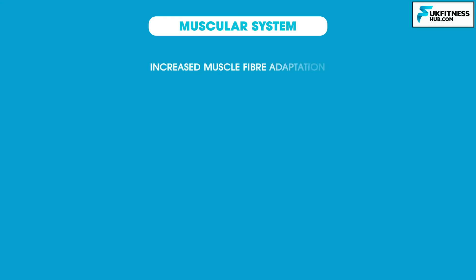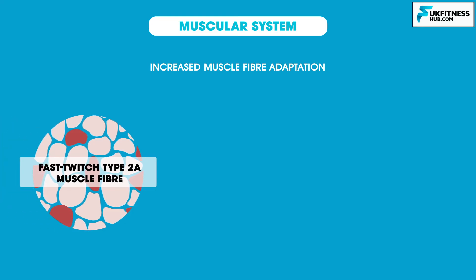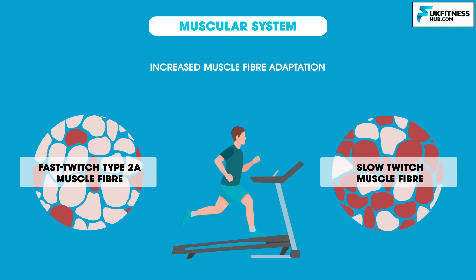Finally, we have increased muscle fiber adaptation. Some research has indicated that skeletal muscle fast twitch type 2a can take on some of the characteristics of slow twitch as an adaptation of aerobic training. This would allow for greater ability to generate ATP aerobically with fewer fatiguing factors.